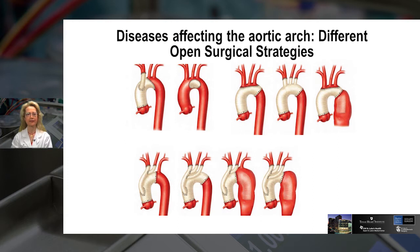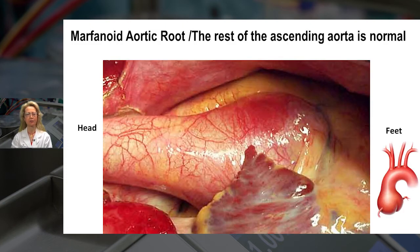These are the different surgical strategies that we have in our armamentarium when we deal with diseases affecting the ascending aorta and the aortic arch. This is the classic what we call marfanoid root, where the ascending aorta is normal and the root is the one that is dilated. In this case, the ascending aorta does not need to be replaced, but we replace or repair the aortic root.